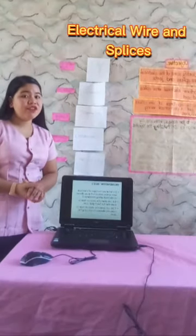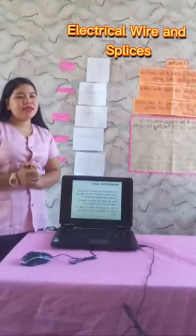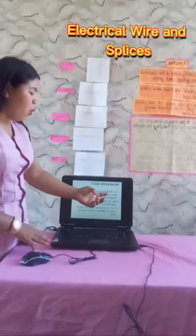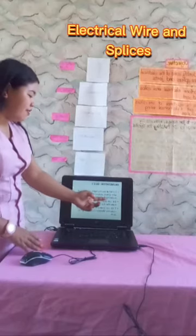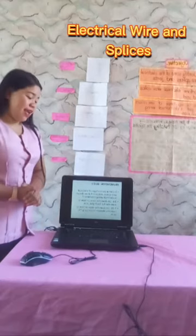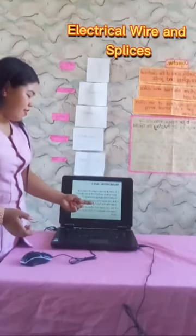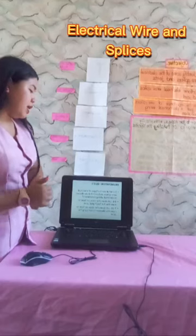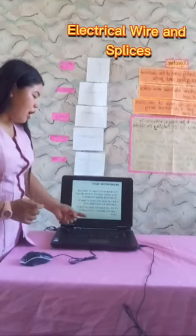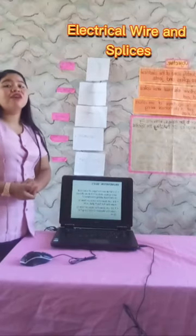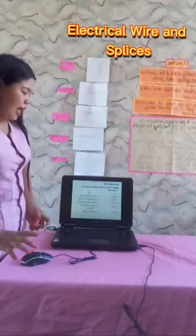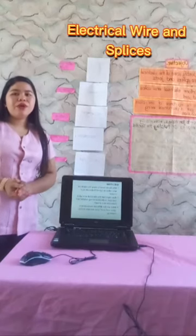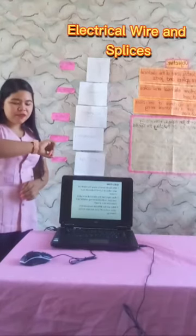That ends our lesson. Get one whole sheet of paper and answer: number one, what are the types of electrical wire splices and joints discussed in electrical wiring installation? Number two, list down the steps on how to make the ruck or pigtail joint. Number three, list down the steps on how to make the western union long tie joint. Next, matching type — match column A with column B. I will give you 15 minutes to answer. Time starts now.